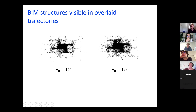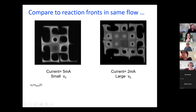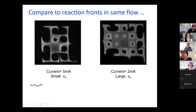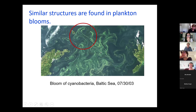Comparing these structures to what we see for reaction fronts in the same flow: again, small non-dimensional speed gives thin structures and large non-dimensional speed gives fat structures. And if you take a look back at this bloom of cyanobacteria in the Baltic Sea and compare it with what we're seeing in the experiments, it's really cool to see these kinds of structures that we're doing in our very simple lab experiments showing up in real life flows as well.